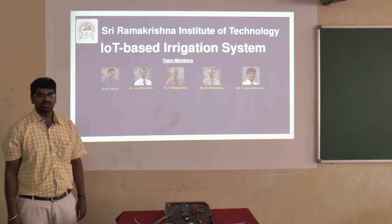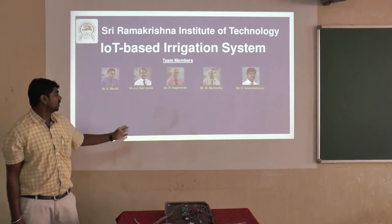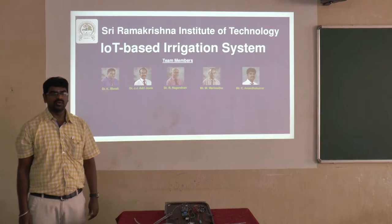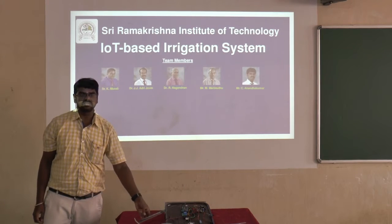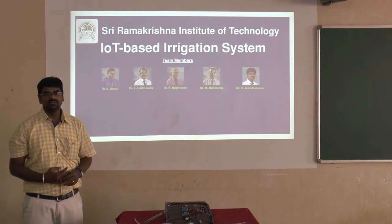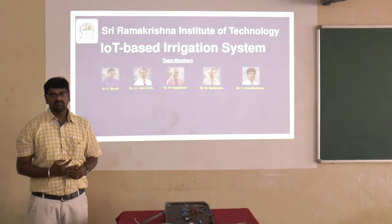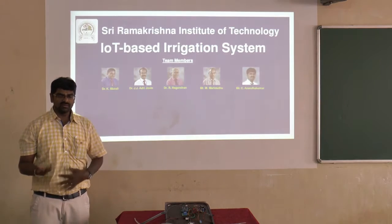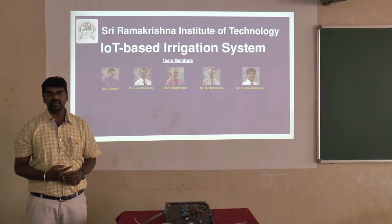Good morning to all. In our IoT-based irrigation system, we are going to control the pH value with the help of nutrients by using sensors. According to the Indian scenario, agriculture is the backbone. With the help of that, we have to increase the efficiency of agriculture until it achieves a good yield.